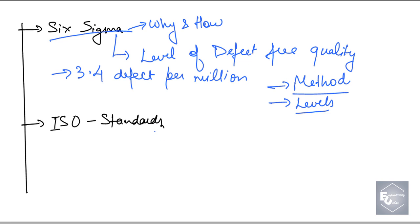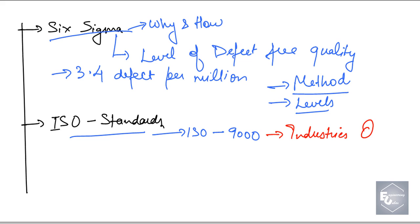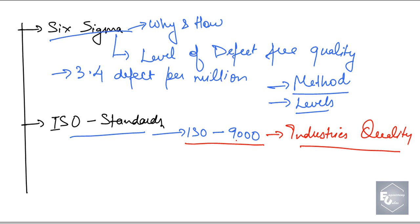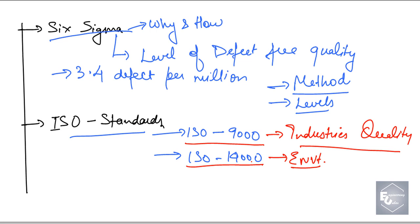Then comes the ISO standards. These are standards maintained by international organizations which are to be followed by different industries. Some of the ISO standards are ISO 9000, which is followed by industries for quality processes — what to do for quality is written in the ISO 9000 standard. Then comes ISO 14000, which tells us about the environment — how the environment will be cared for alongside the industrial process. All the practices to be done are written in this standard.